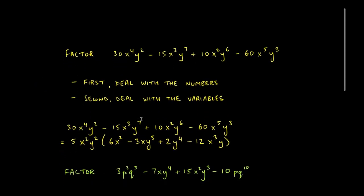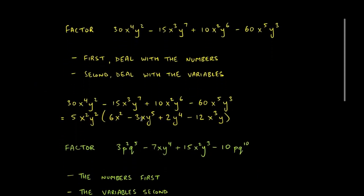Let's look at a new problem: factor 30x⁴y² − 15x³y⁷ + 10x²y⁶ − 60x⁵y³.